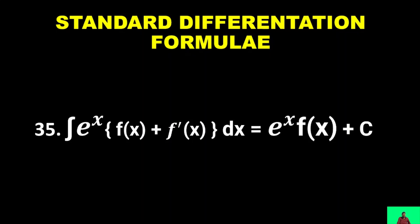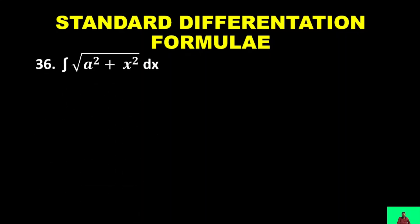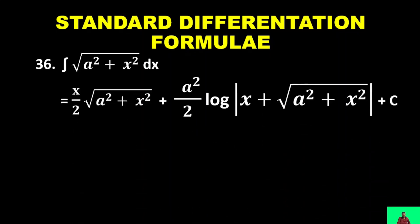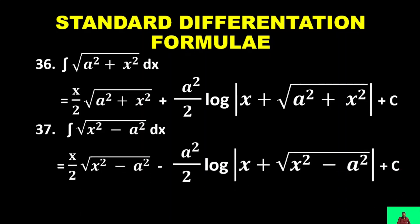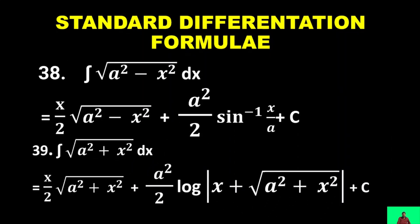∫eˣ[f(x) + f'(x)] dx = eˣ f(x) + C. ∫√(a² + x²) dx = (x/2)√(a² + x²) + (a²/2) log|x + √(a² + x²)| + C. Similarly, ∫√(x² − a²) dx = (x/2)√(x² − a²) − (a²/2) log|x + √(x² − a²)| + C. ∫√(a² − x²) dx = (x/2)√(a² − x²) + (a²/2) sin⁻¹(x/a) + C.